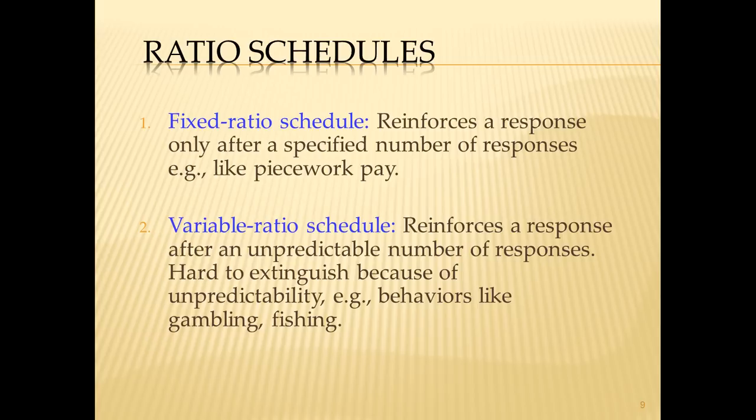Gambling is a perfect example of variable ratio reinforcement. You sit at a machine, pull the lever, and don't win, and don't win, and don't win — but then you do win. You keep going because you're always waiting for that next win. This also explains why some people persist with ineffective pickup lines — if it works one out of every 45 times, the variable reinforcement keeps the behavior going.